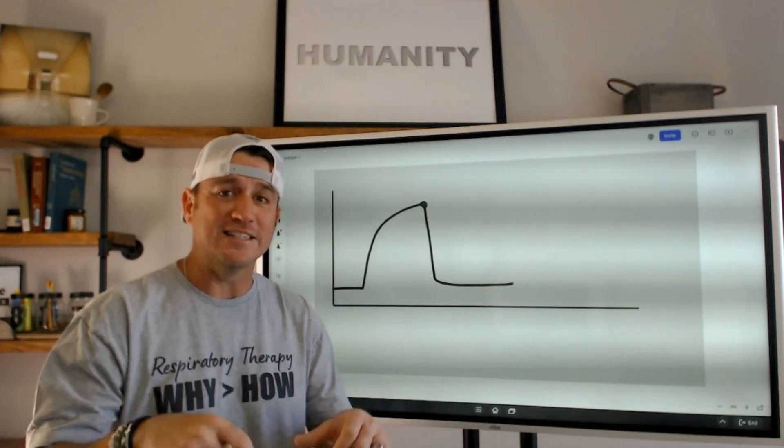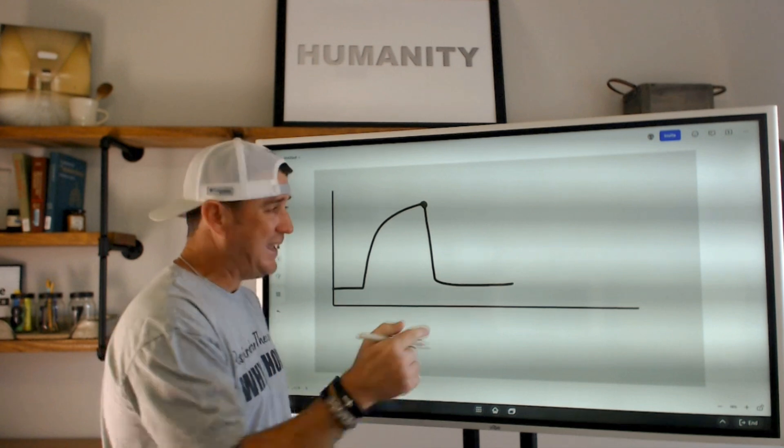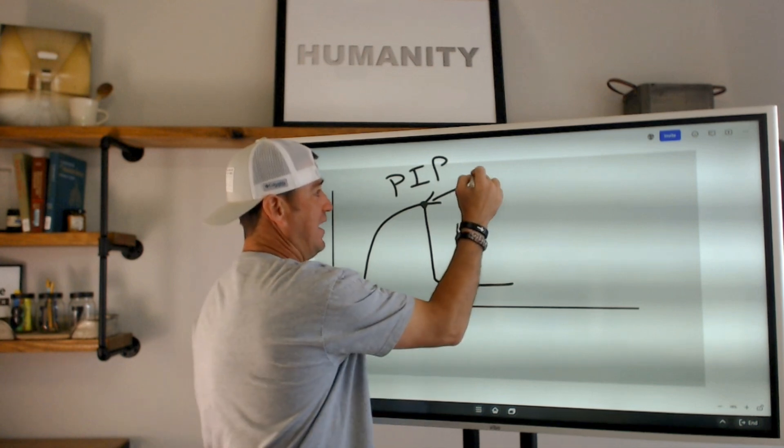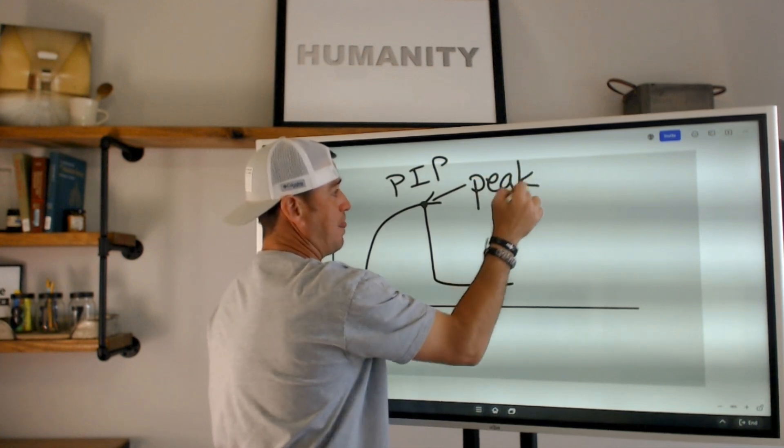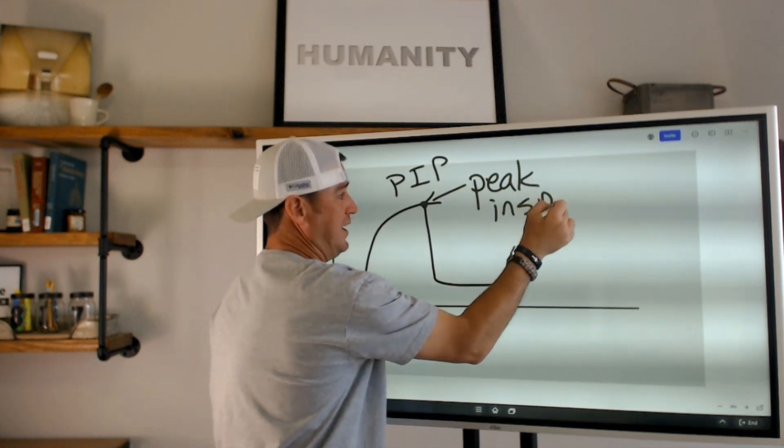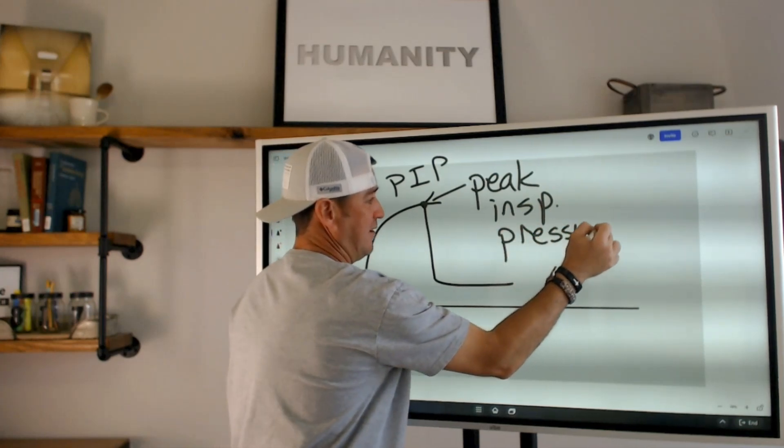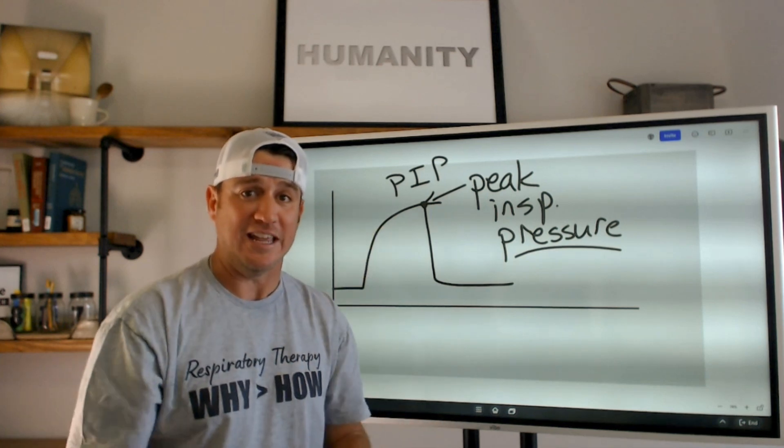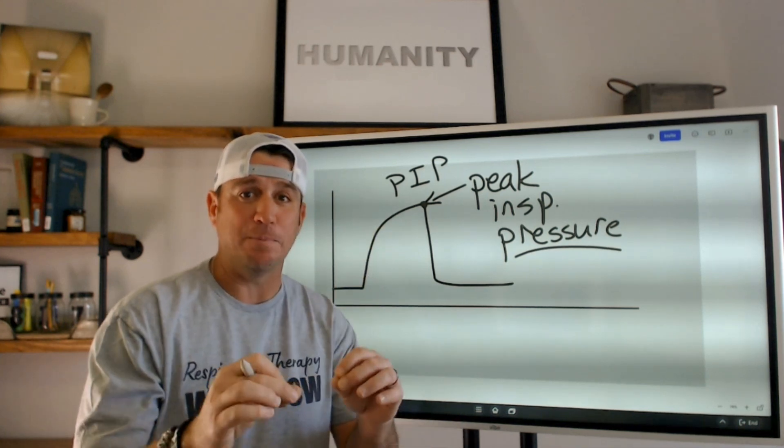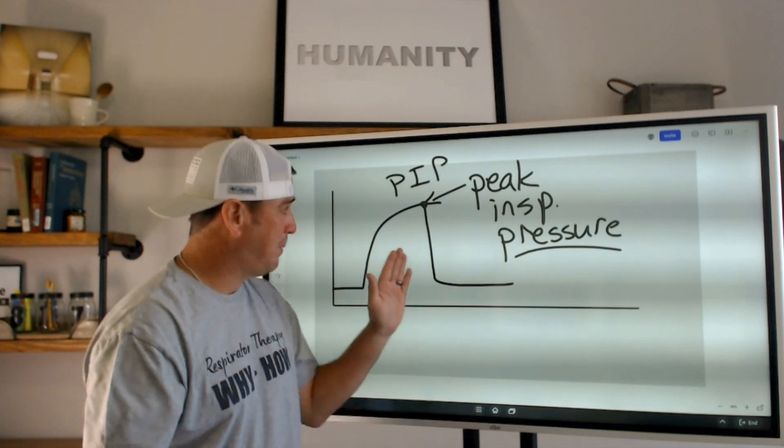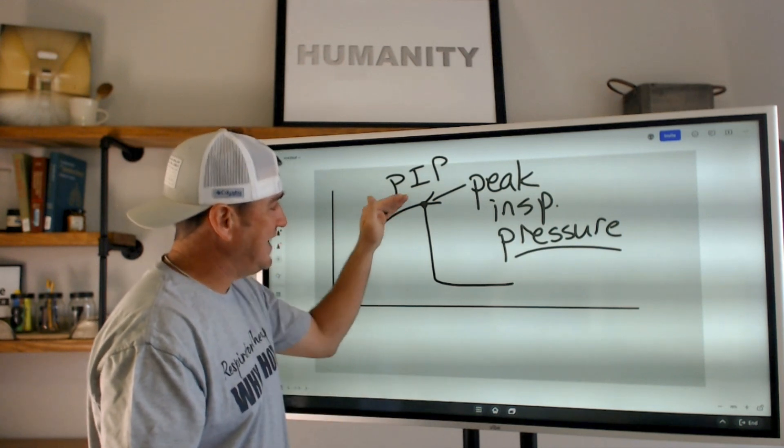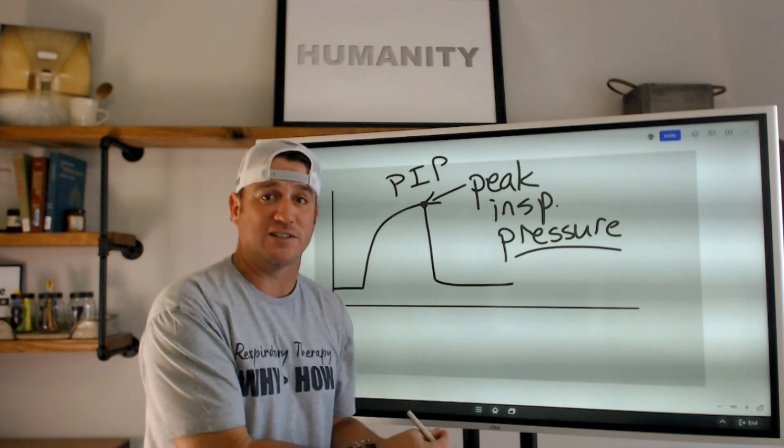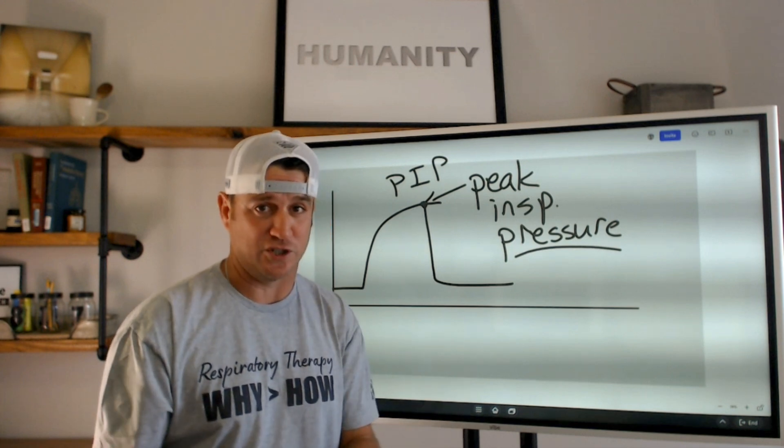Okay. Now, what is peak inspiratory pressure? PIP refers to that point right there. This is the peak inspiratory pressure that was met or resulted in positive pressure therapy. That's what peak inspiratory pressure is. The peak inspiratory pressure happens at the end of inspiration associated with a positive pressure breath.